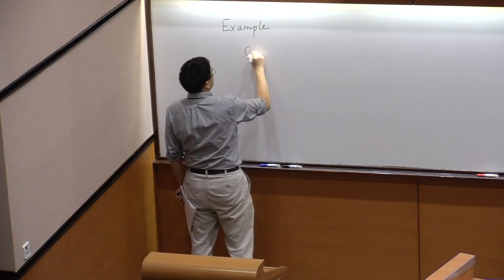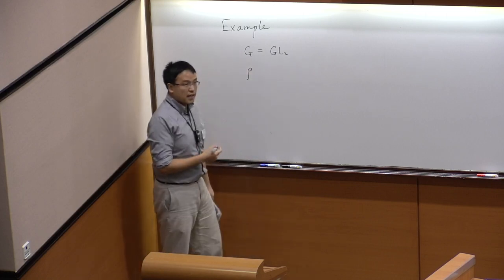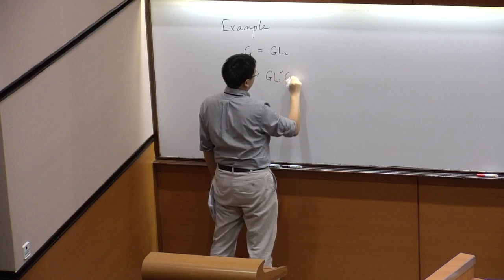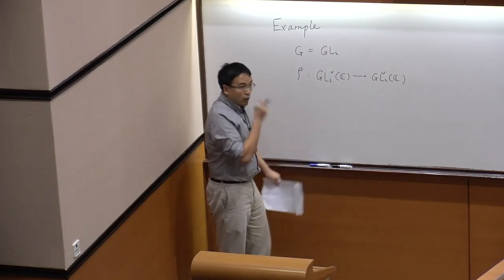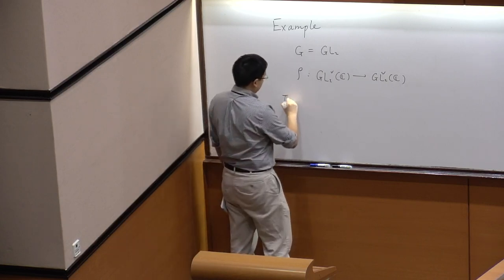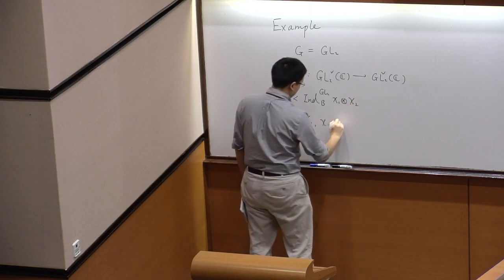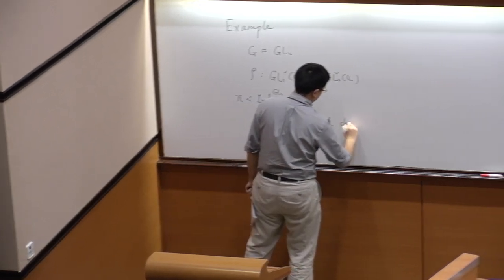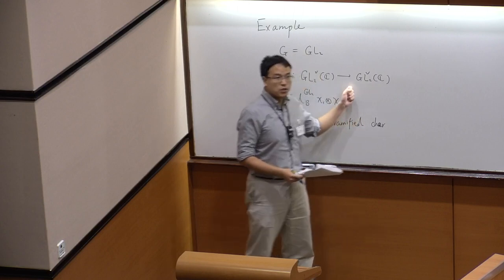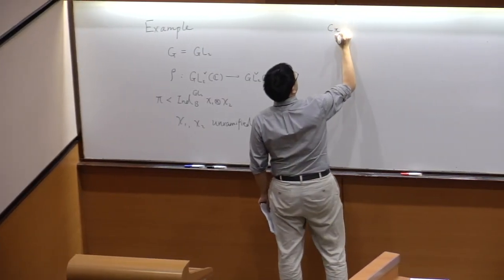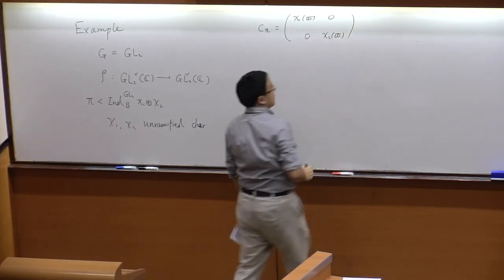We're going to consider G is just the GL2, and the dual group is going to be also the GL2, and we consider the standard representation of GL2. The ρ is just the identity map. We take a π which is an unramified representation on GL2. So π is going to be a constituent of the induced representation from the unramified character. Using the Langlands correspondence, we get a semi-simple conjugacy class in GL2. Let's denote C_π to be the Satake parameter, with χ₁(π) and χ₂(π) the uniformizers — let's simply denote by α and β.